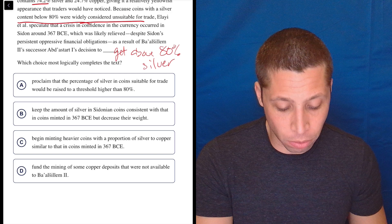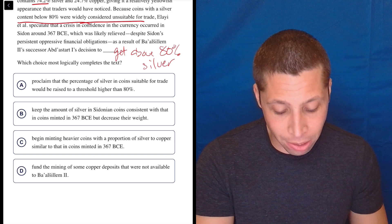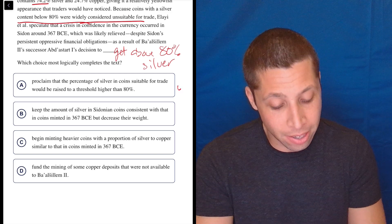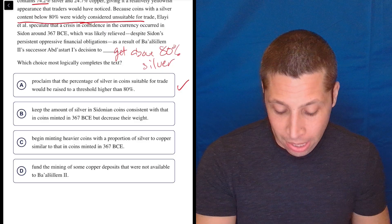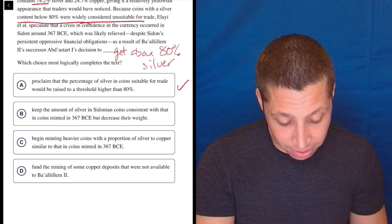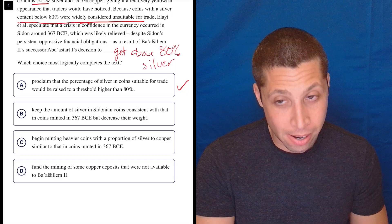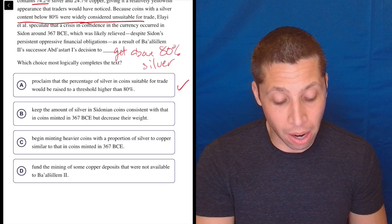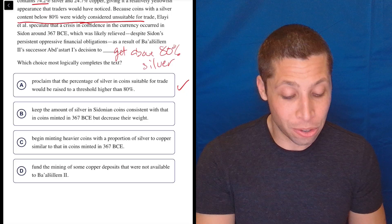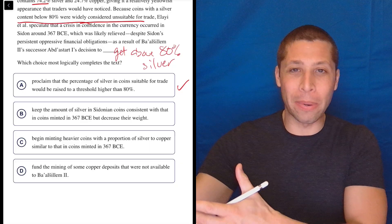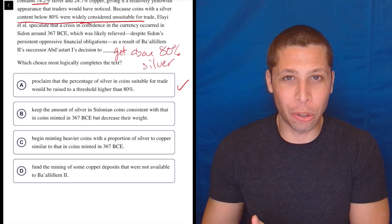Let's see if there's a choice that kind of matches that. A, proclaim that the percentage of silver in coins suitable for trade would be raised to a threshold higher than 80%. Hey, that sounds like exactly what I just said. Let's look at B. Keep the amount of silver in Sidonian coins consistent with that in coins minted in 367 BCE, but decrease their weight. Now, to me, that seems obviously wrong because the problem is that we're below 80% and they don't think of that as suitable for trade.